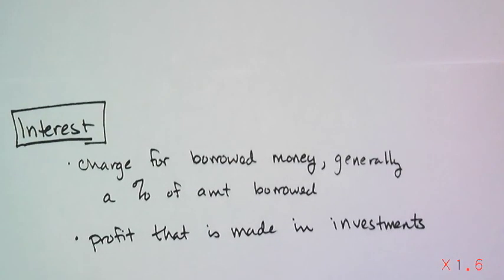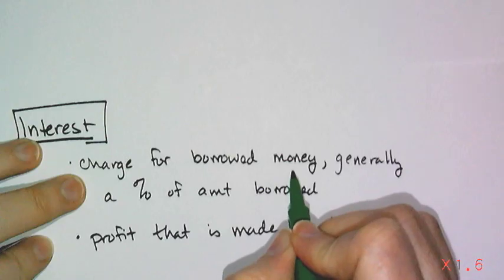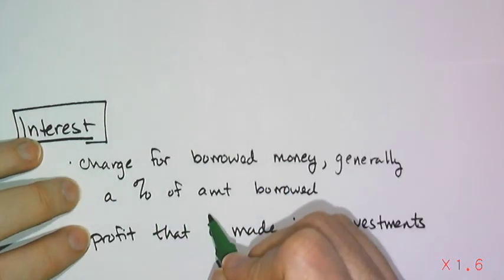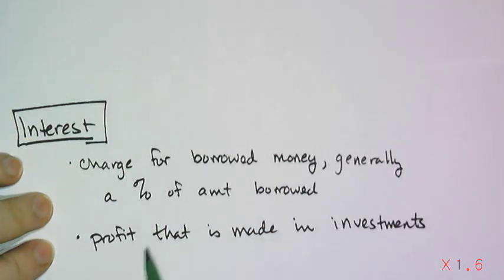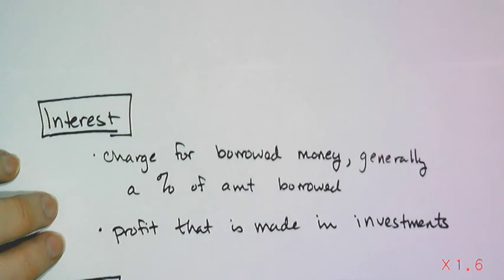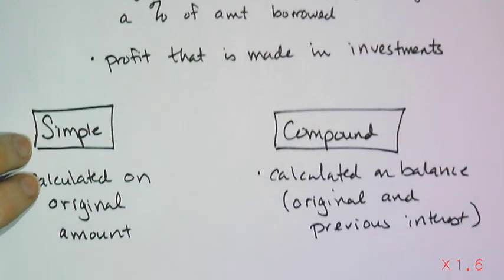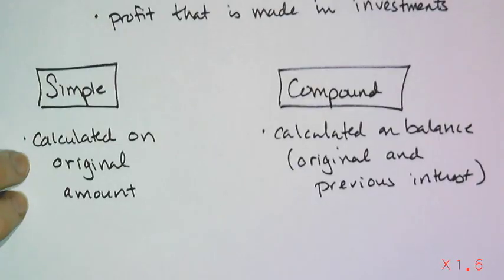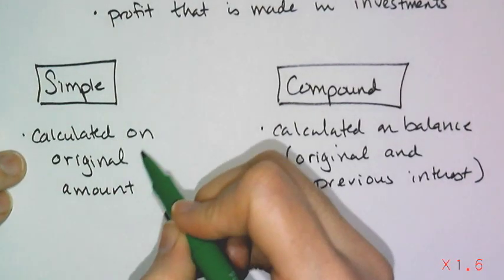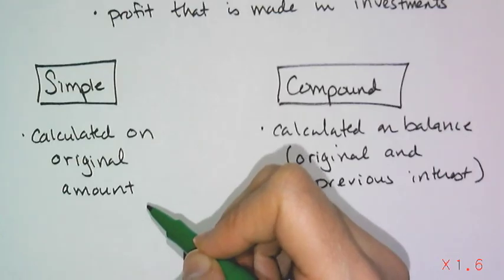Now what I'm really interested in is interest. Interest is a charge for borrowed money — generally a percent of the total amount borrowed — or it can be seen as the profit made from investments. There are two ways to calculate interest: simple interest and compound interest.